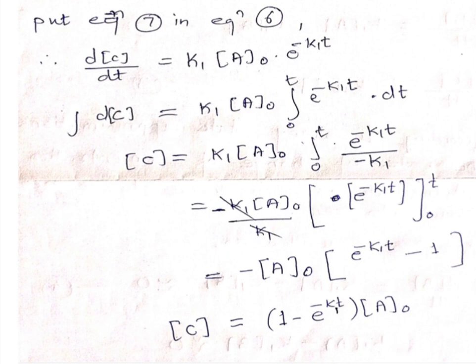By finding the intermediate concentration you can find the concentration of the product also. Steady state approximation is useful for finding the concentration of the intermediate species B and the concentration of the product. In further reactions, to apply SSA: first identify the intermediate, then apply steady state approximation setting the rate of change of intermediate concentration to nearly 0, find the intermediate concentration, substitute into the product rate equation, and find the concentration of the product.